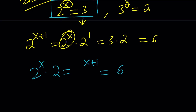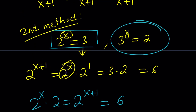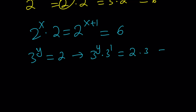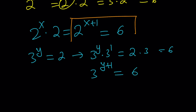Now we do the same thing for the other exponential, but this time be careful — you need to multiply both sides by 3, not 2, because the base is 3 here. So we start with 3 to the y equals 2, and multiply by 3 to the first power, giving 2 times 3, which is 6. So this gives us 3 to the power y plus 1 equals 6. So these are the two things we're going to use: 2 to the power x plus 1 and 3 to the power y plus 1, both equal to 6.